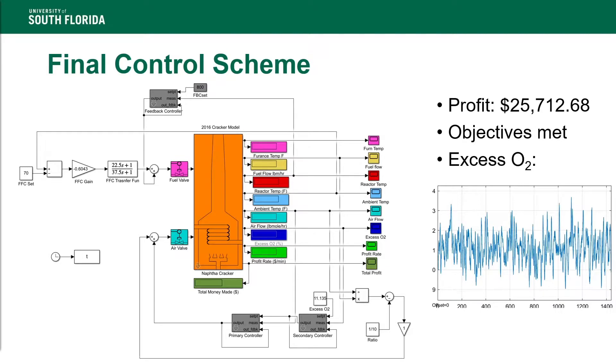After evaluating both alternatives, Alternative 1 showed better control of the excess O2. Alternative 1 was combined with a ratio control, where the ratio controller adjusted the position of the air valve based on the fuel flow to the air flow, which had a ratio of 1 over 10.